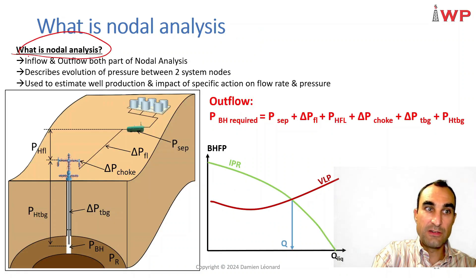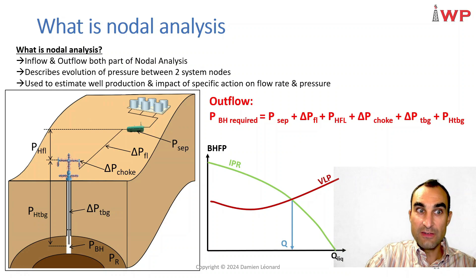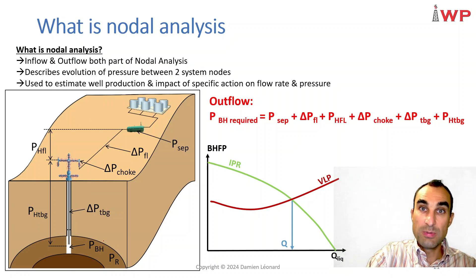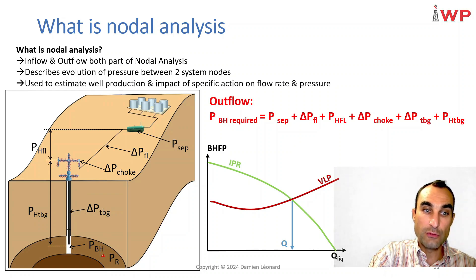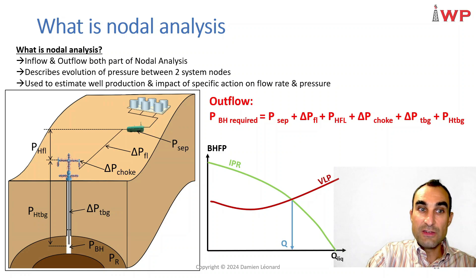What is node analysis? The well inflow and the well outflow are both parts of node analysis. Node analysis describes the evolution of pressure between two system nodes. Applied to well production, it usually starts with a node situated somewhere in the reservoir and finishes with a node situated somewhere at the surface, either in your production separator or at your wellhead level.